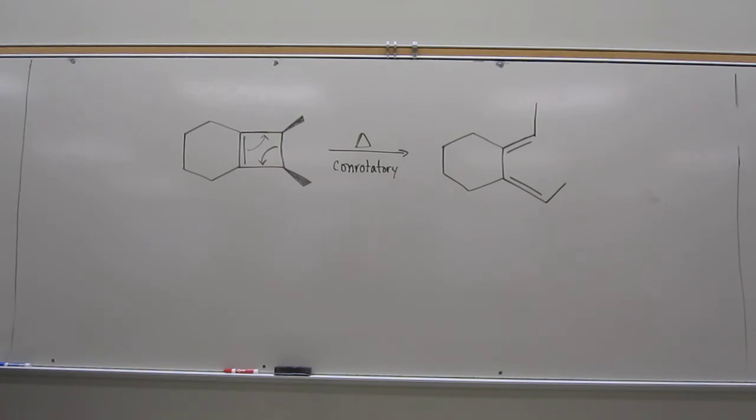So you've got to remember which way they go, heat or light. The cool thing is it's opposite for the six-electron system as it is for the four-electron system. Since heat is con in the four-electron, it's dis in the six-electron system.